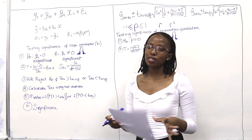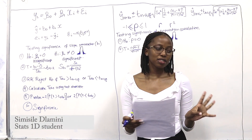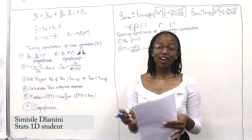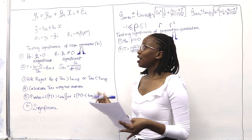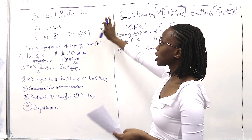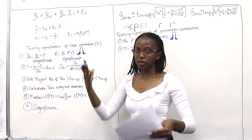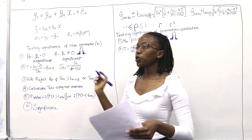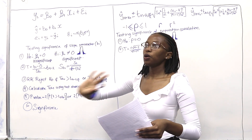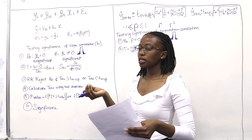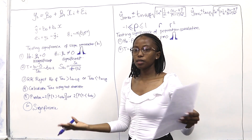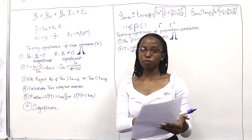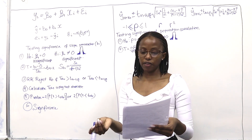Hi, my name is Nisile Lamini. Today we're going to do regression and correlation analysis, which is basically about looking at the relationship between two variables. In this course, we're usually looking at a linear relationship, which means we're looking at an independent variable and a dependent variable. The independent variable determines what the dependent variable will be in terms of numerical value.